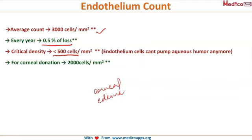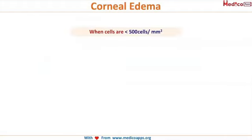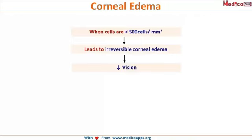For corneal donation, the minimum endothelial cell count in the donor cornea should be 2000 cells per millimeter square — anything less than that, and the keratoplasty or corneal implant will not be of any use. When cells fall below 500 per millimeter square, it leads to irreversible corneal edema and deterioration of vision, which is treated by keratoplasty or corneal transplantation.